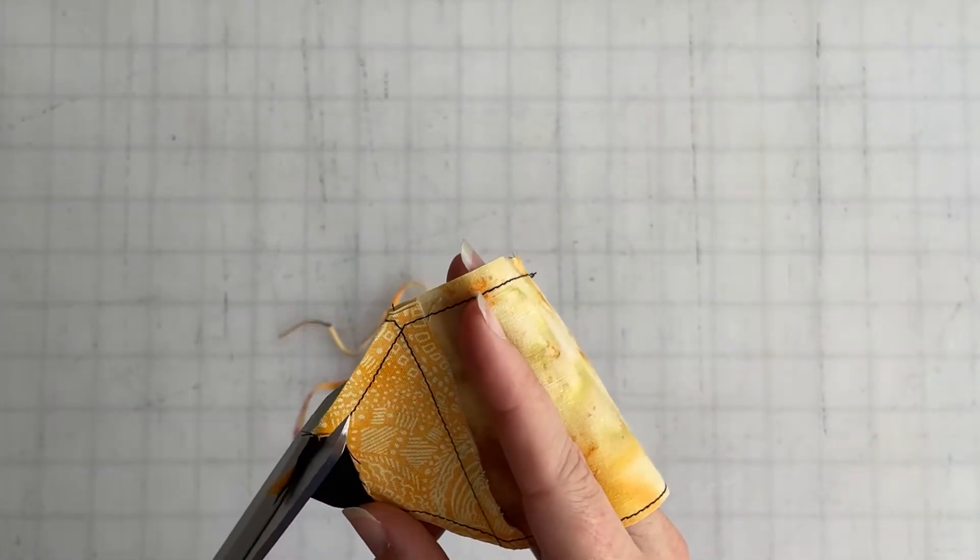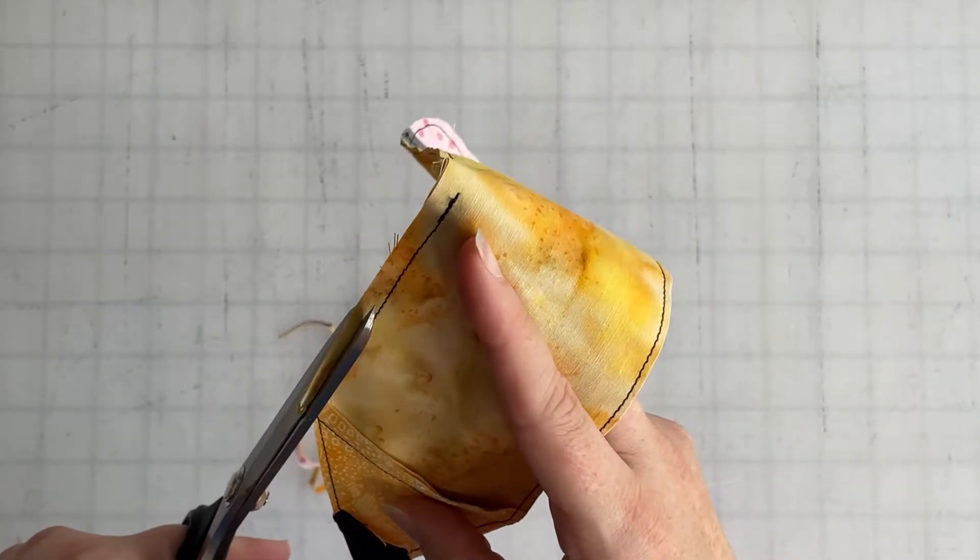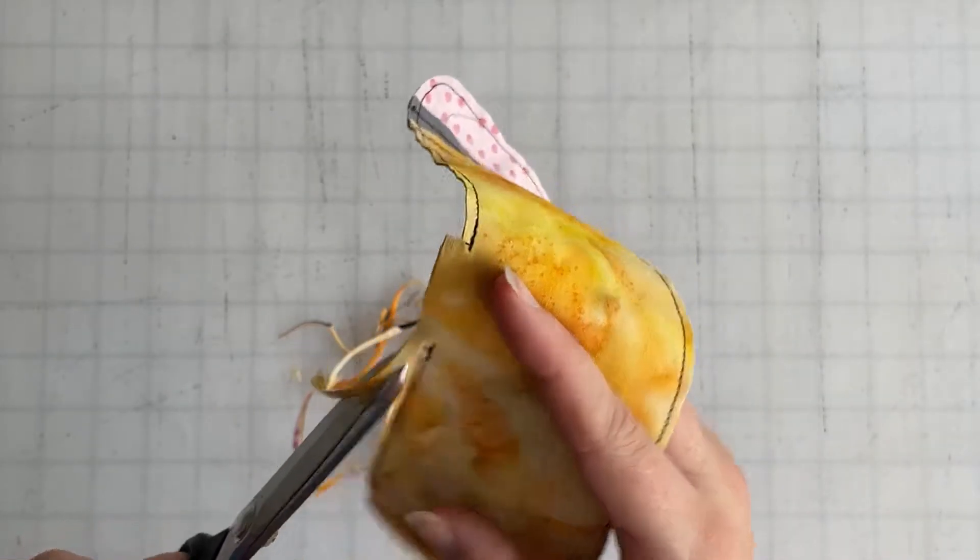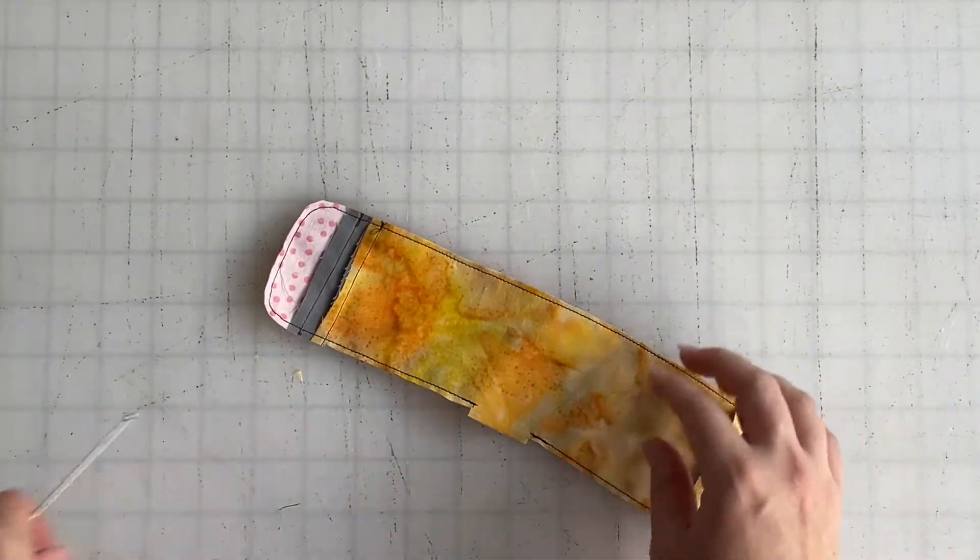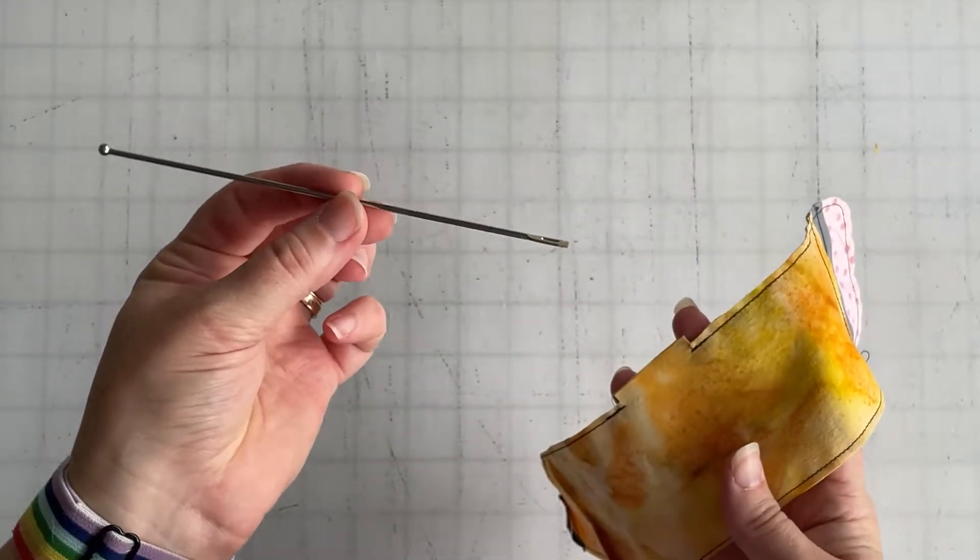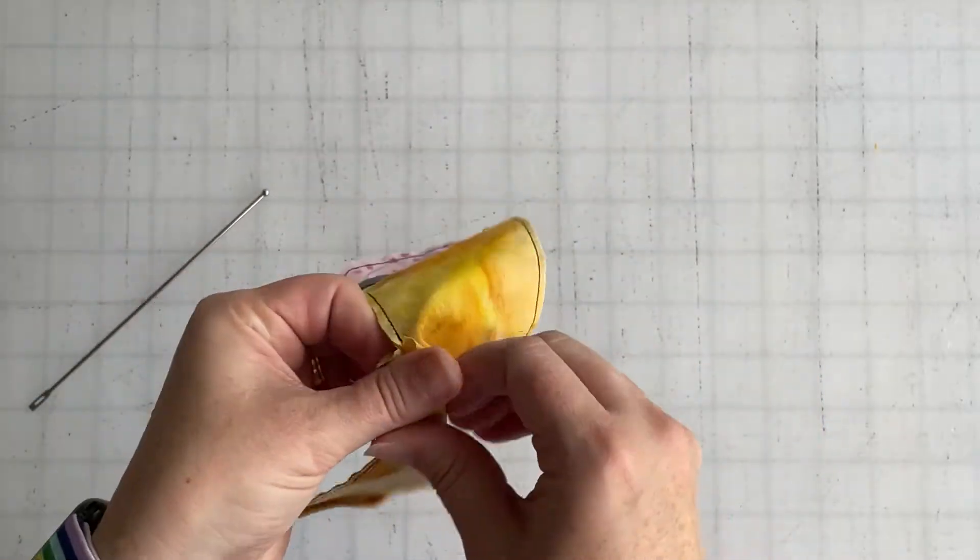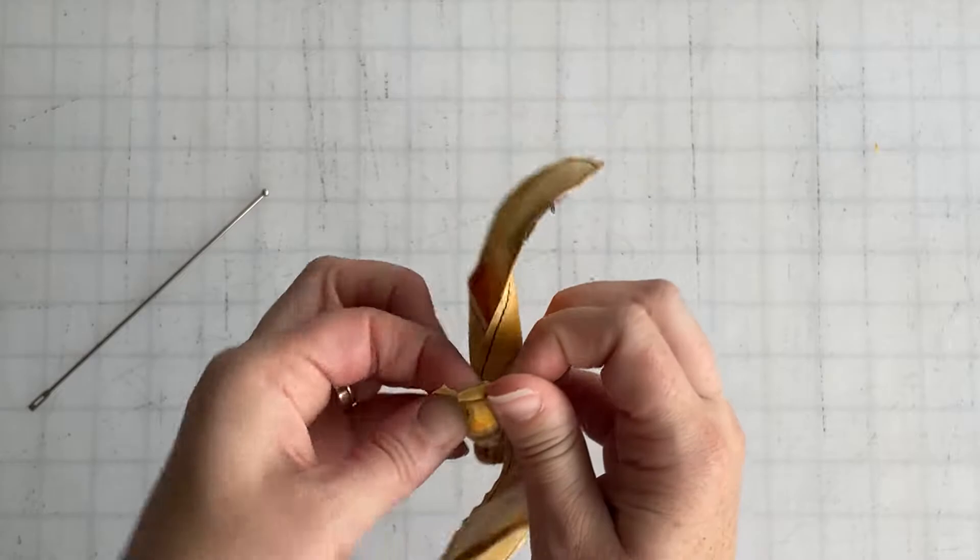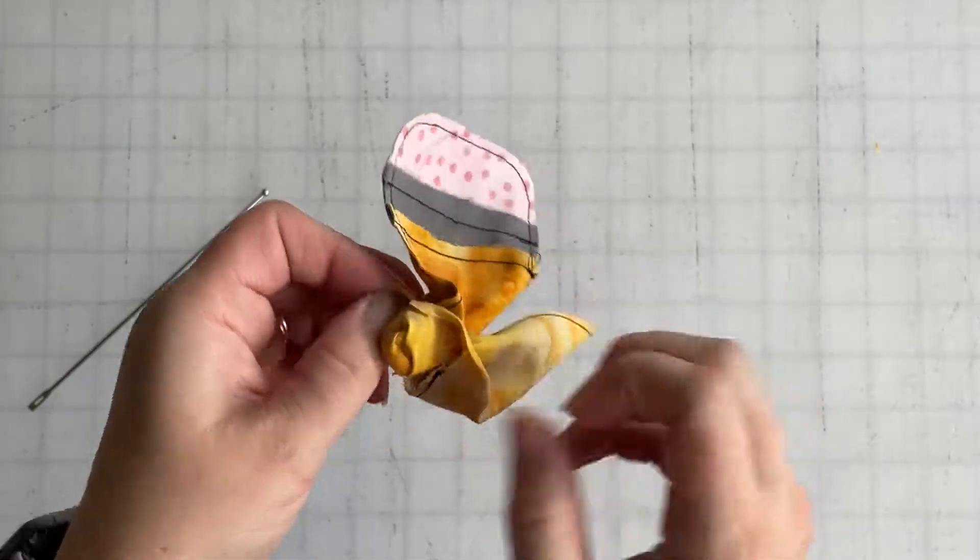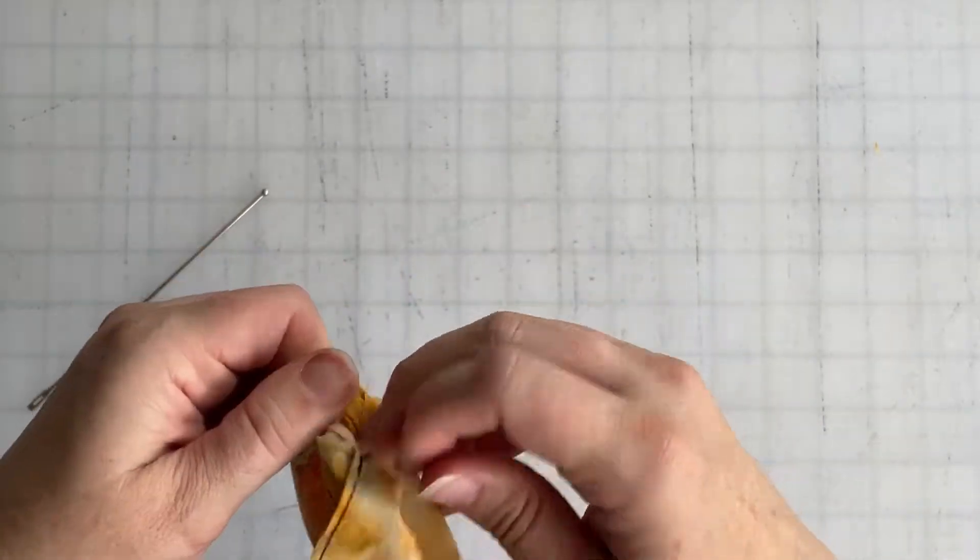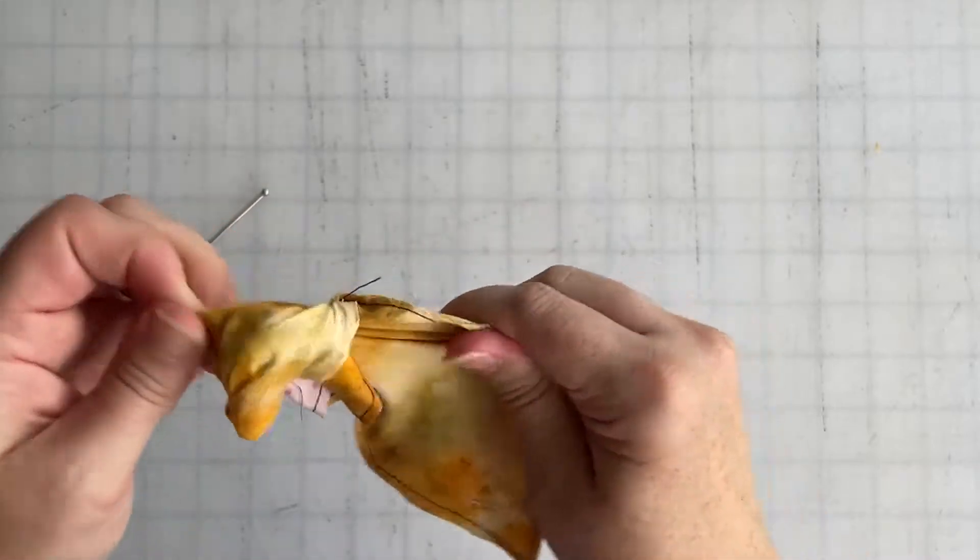Now I like to use a turning tool because it just makes it a little bit easier. I have this one which is actually a bodkin for threading, but it also works great for pushing out points. We're just going to take this and turn it right side out. Of course I told you to leave an inch and a half to two-inch opening and I did not follow my own rules, so you're going to watch me struggle a little more than I should.